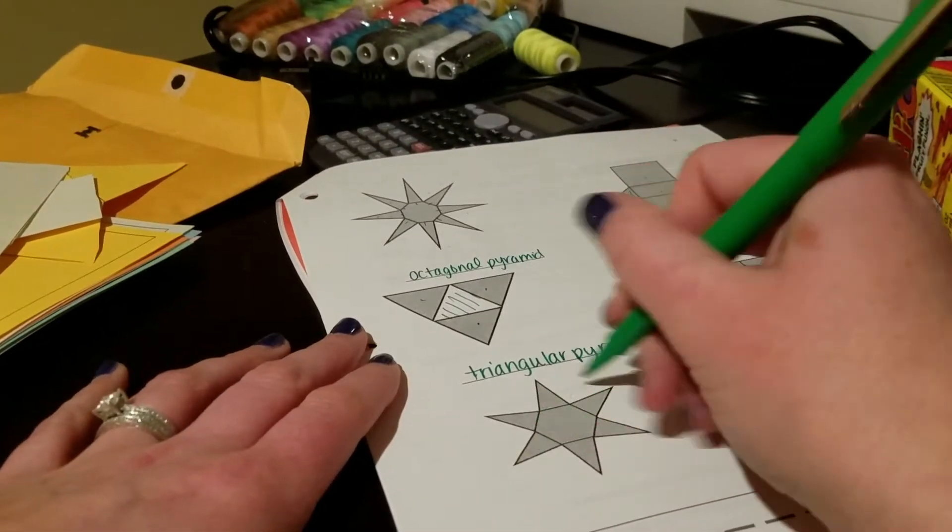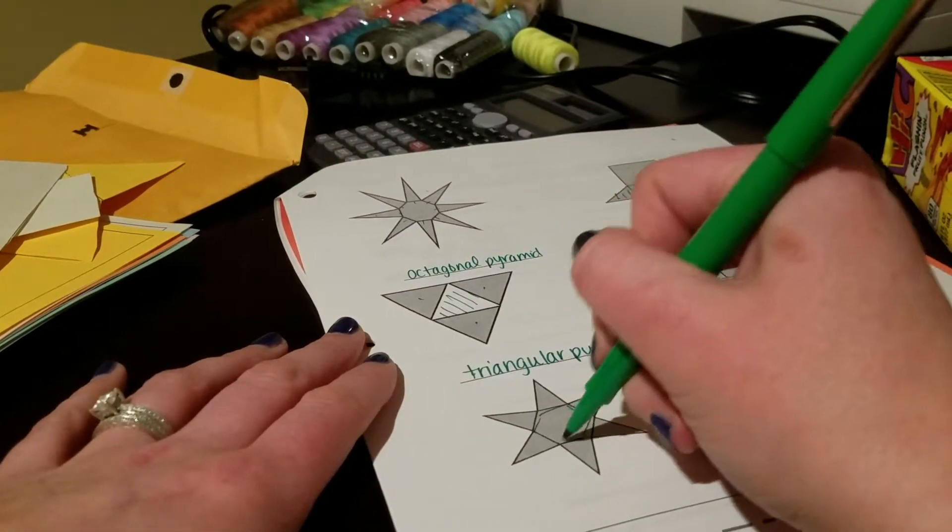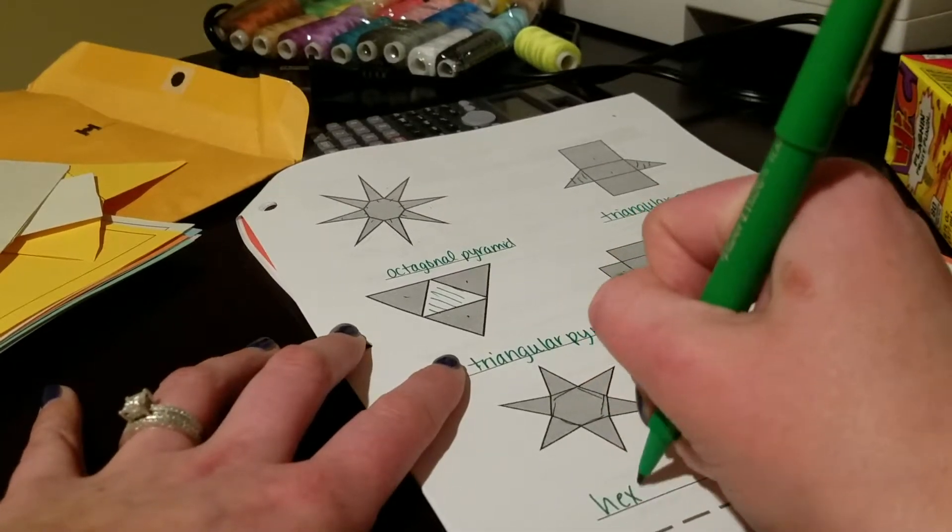This one is looking like a star, so it's a pyramid. One, two, three, four, five, six. So it's a hexagonal pyramid.